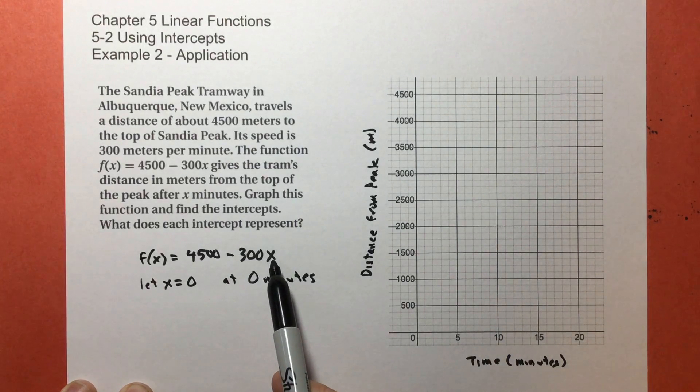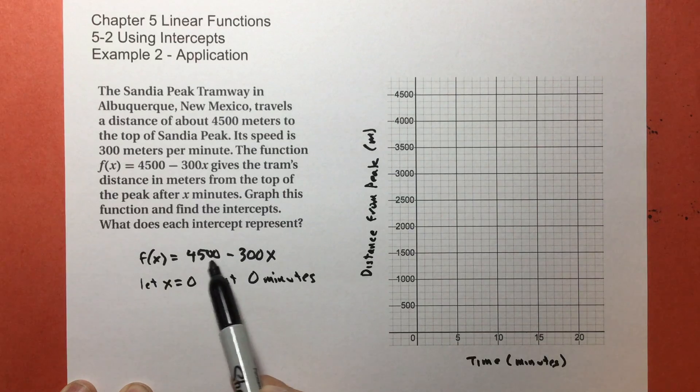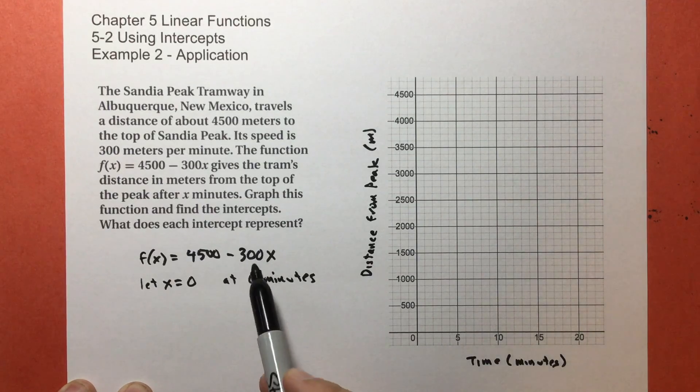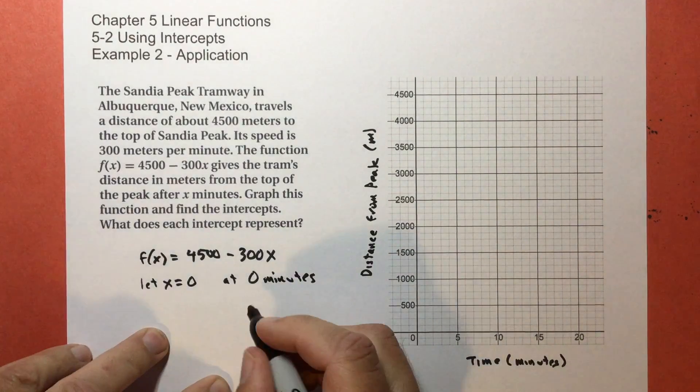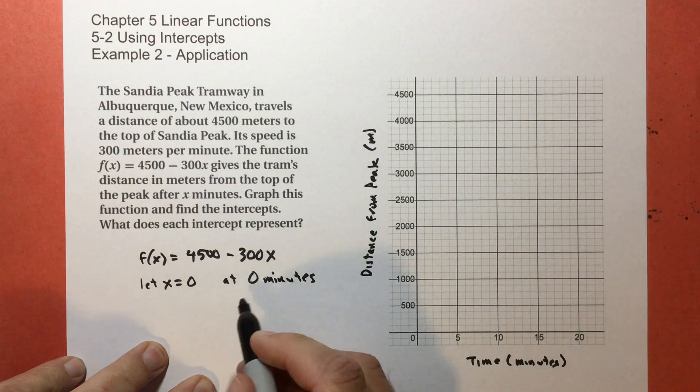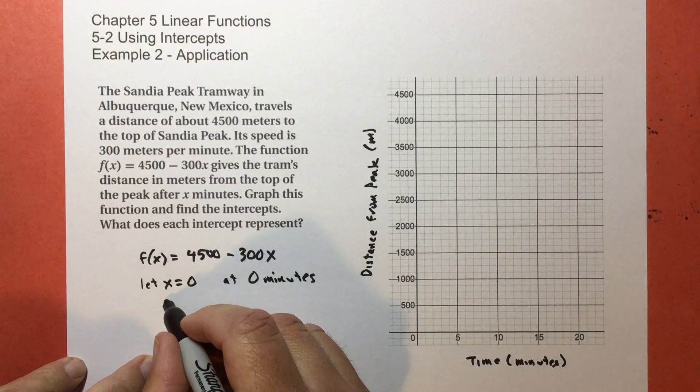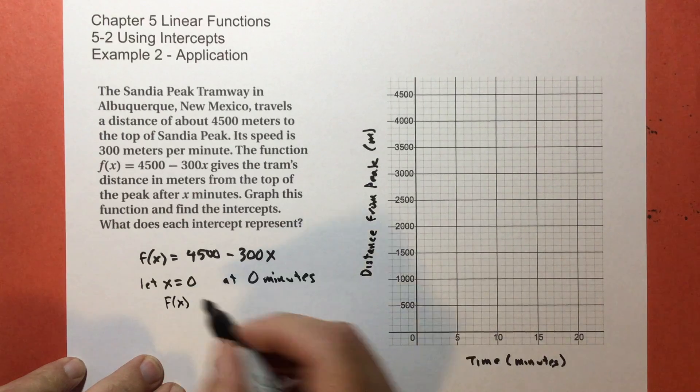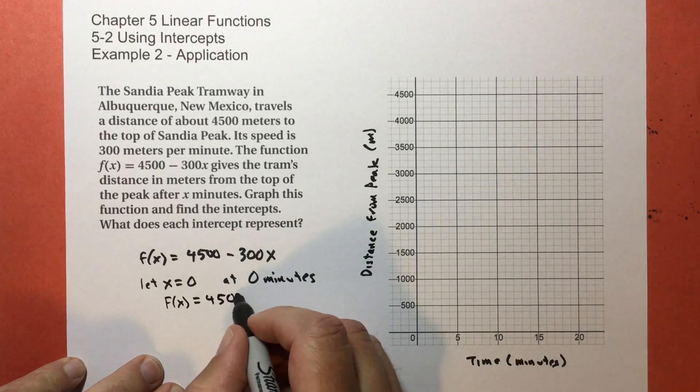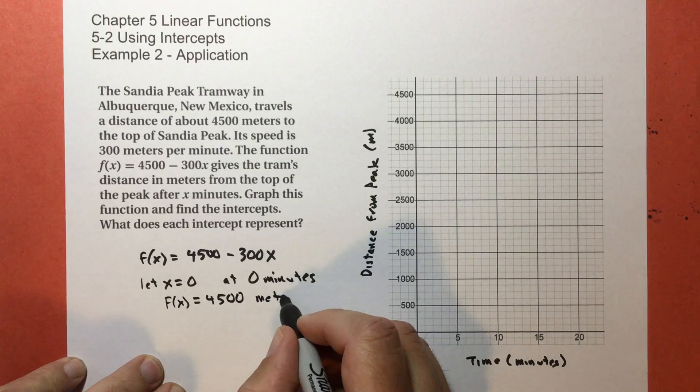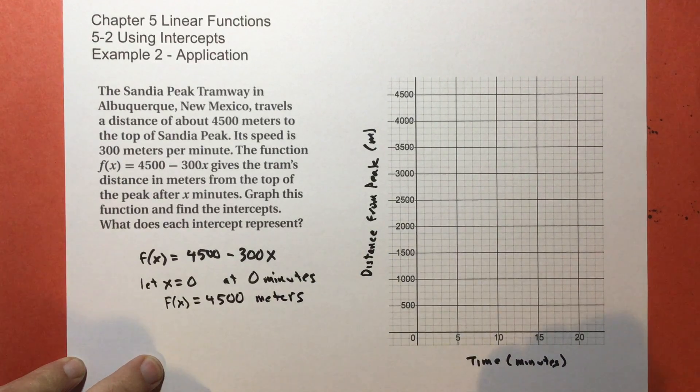you are 4500 meters away. How do I know that? Because 300 times zero is zero, and 4500 minus zero is 4500. So, at zero minutes, f of x, which could also be y, is going to be 4500 meters away.